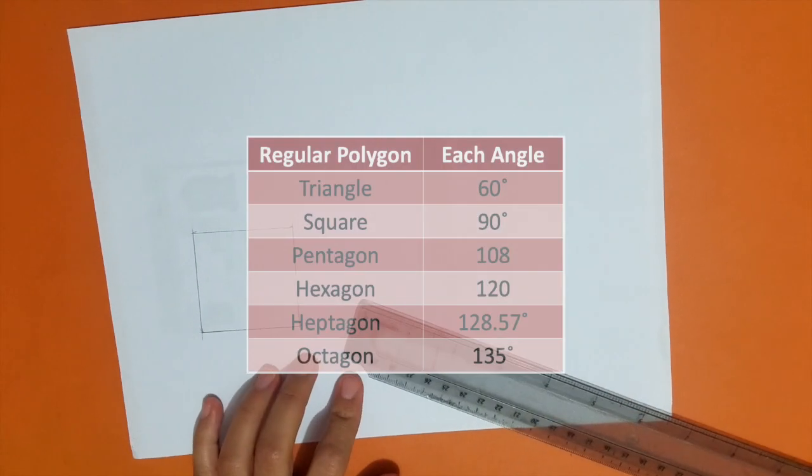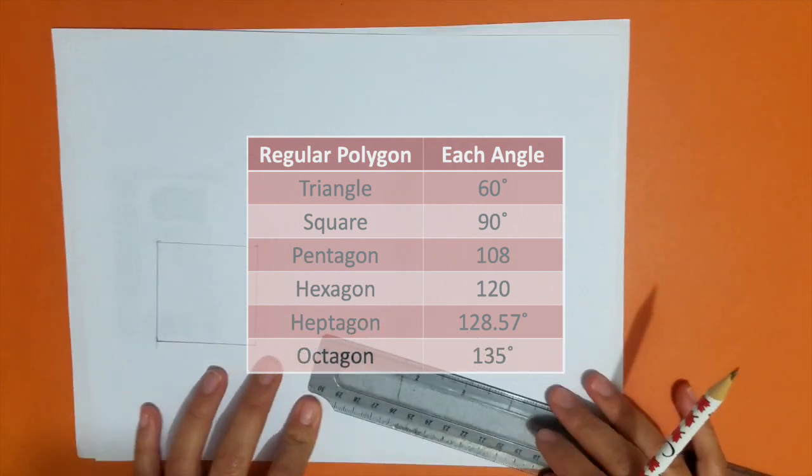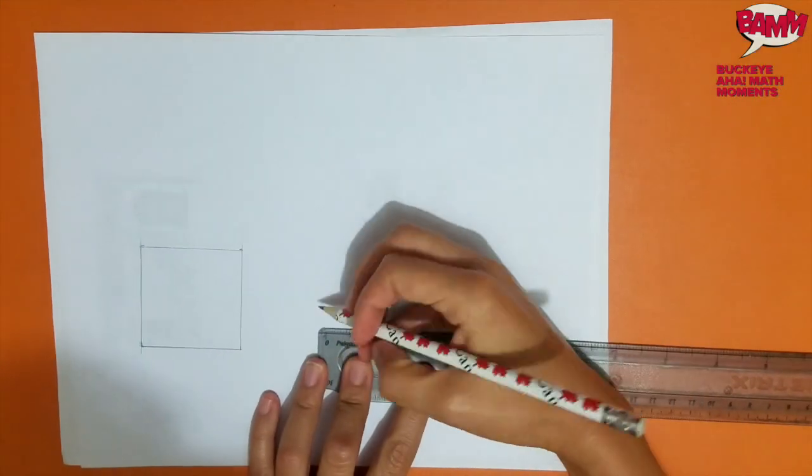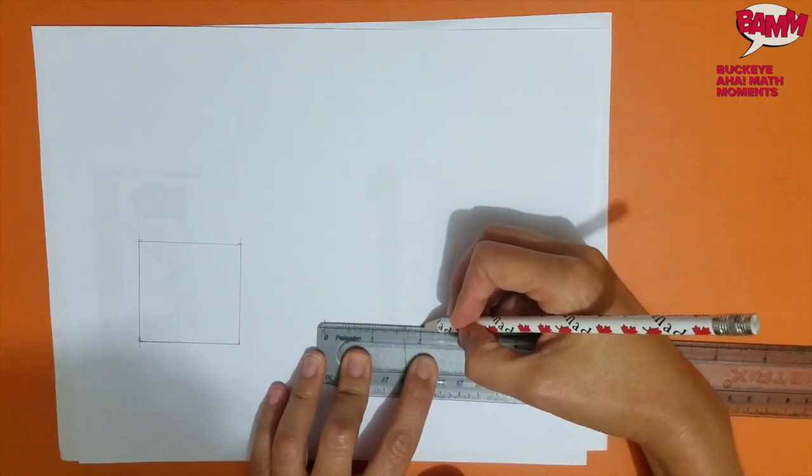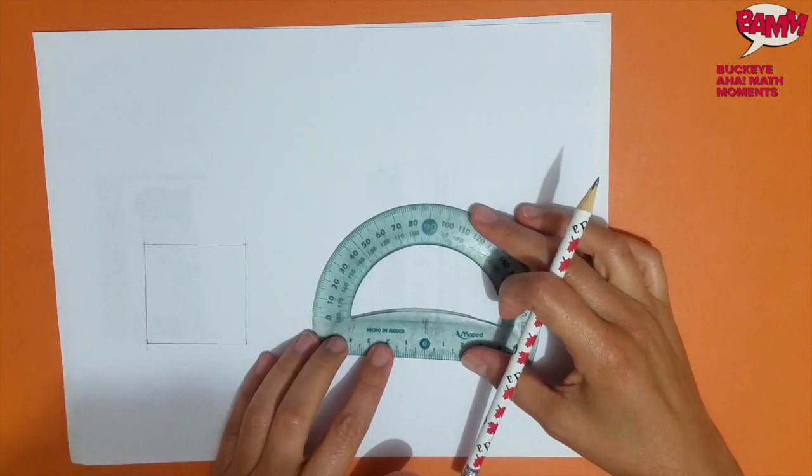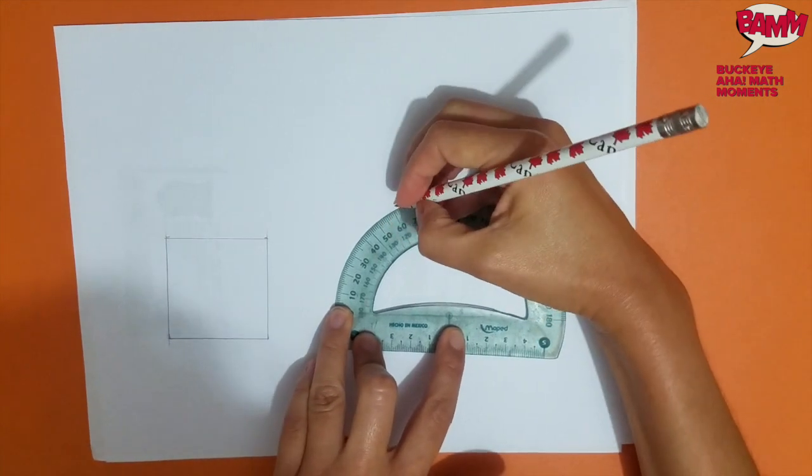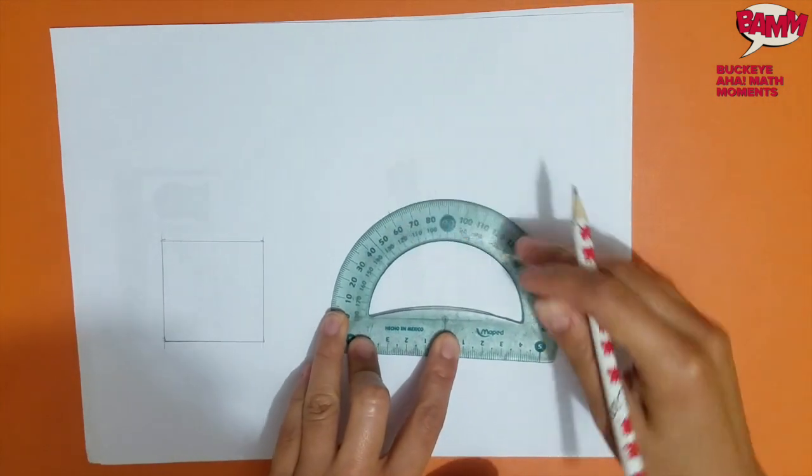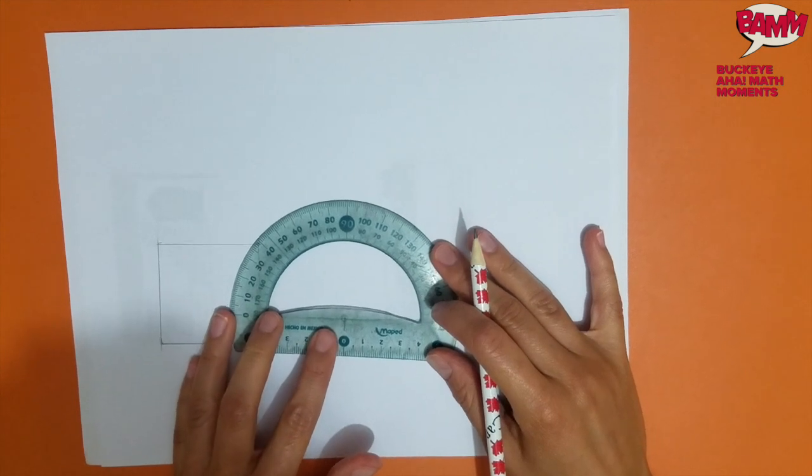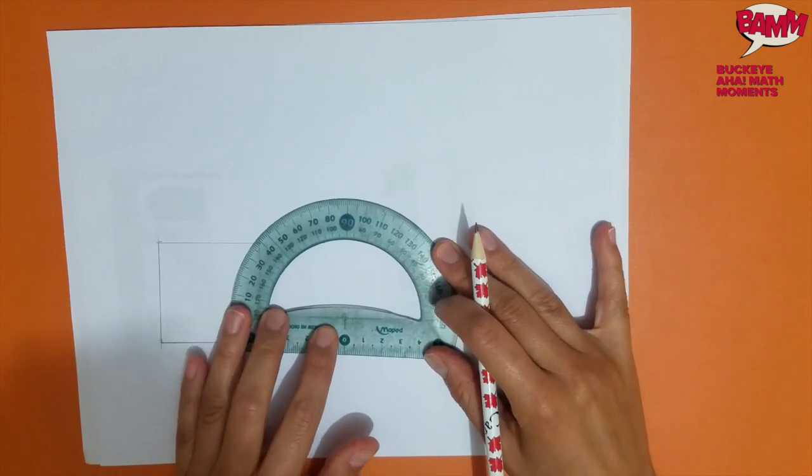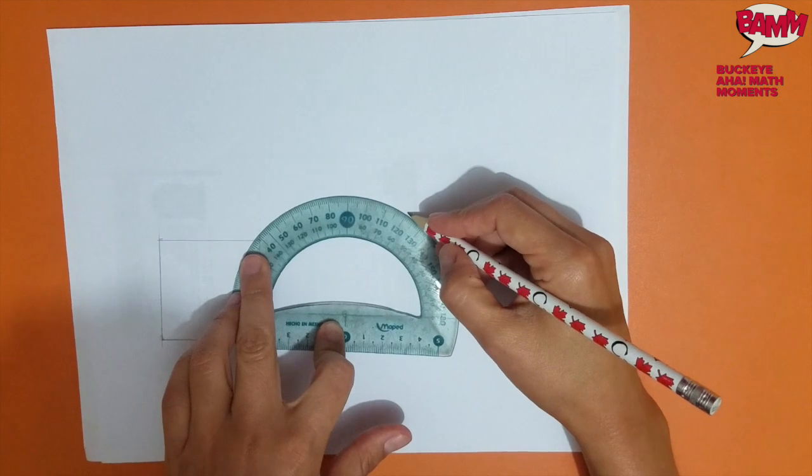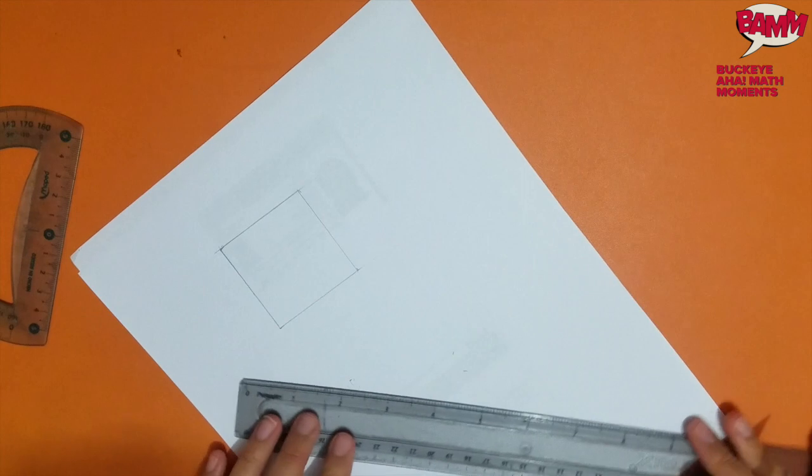I can follow the same process with all other polygons. For example, a triangle has angles of 60 degrees. So I start by drawing my segment of 2 inches, or whatever length you want. Then I'm going to measure a 60 degree angle on both ends of the line. And then again, I'm going to join the ends.